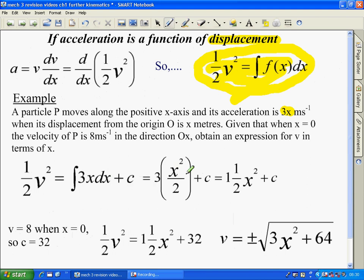So we integrate 3x to get this, plus c, and then we look at our initial conditions here. v is 8 when x is 0, so we substitute v equals 8 and x equals 0 into this, and we get half v squared is this. Rearrange and get v is the root of 3x squared plus 64.